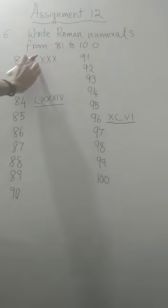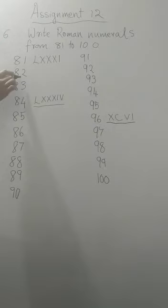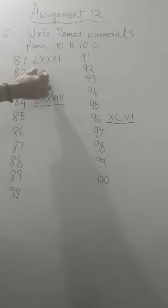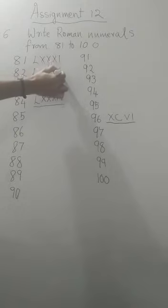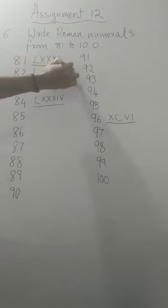That means you can write it as 50 plus 10 plus 10 plus 10. That means 50, 60, 70, 80 and 81. That means what will you do? You will put in 1 here. Next 82. That means you will repeat this thing, same thing you are going to write. That is 50 plus 10 plus 10 plus 10 and then write it 2. Next, this is 81, this is 82.